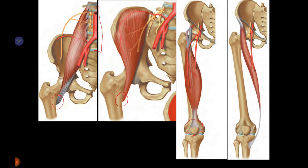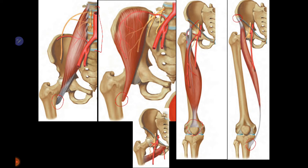Sartorius muscle arises from the anterior superior iliac spine, crosses two joints, and inserts over the anteromedial aspect of the tibia. Pectineus muscle arises from the superior pubic ramus and inserts over the femur. It forms the base of the femoral triangle and is the landmark where the femoral neurovascular bundle lies anterior to the muscle.